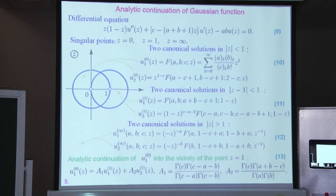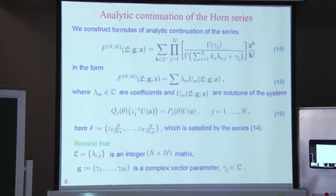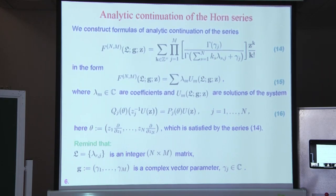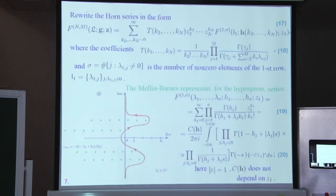Well-known monographs by Bateman, Erdélyi and others contain the full range of these formulas. Of course, for multiple hypergeometric functions the problem is much more difficult. The problem of finding solutions to the hypergeometric system 16 is very difficult. We propose an approach that allows one to find analytic continuation of the Horn hypergeometric function in the form 15 and find all the functions u and coefficients λ, where u are solutions to the hypergeometric system 16 of partial differential equations.